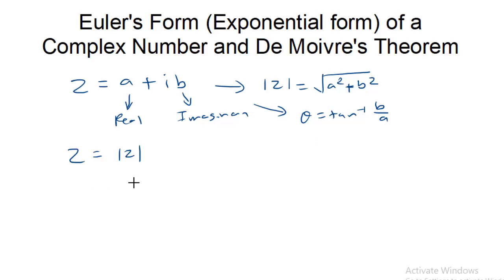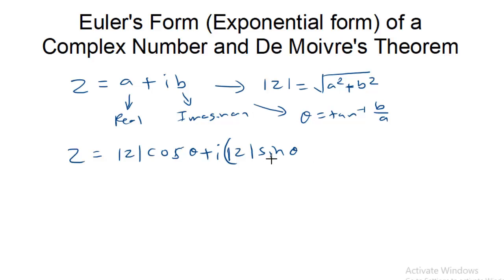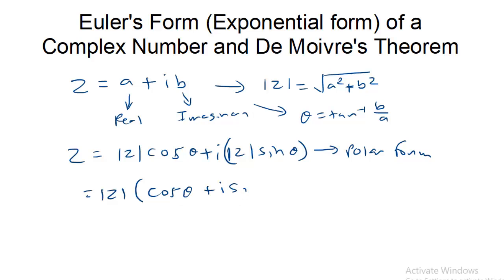we can present it in the polar form: Z = |Z| cosθ + i|Z| sinθ, which can be written as |Z|(cosθ + i sinθ). This angle theta is the argument, and it can be represented on the Argand plane. The real axis and imaginary axis are shown, with Z plotted and theta as the angle.